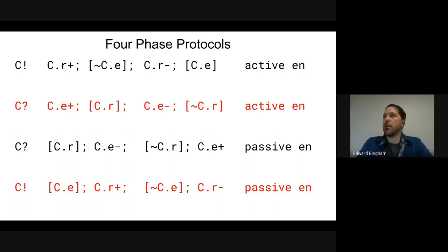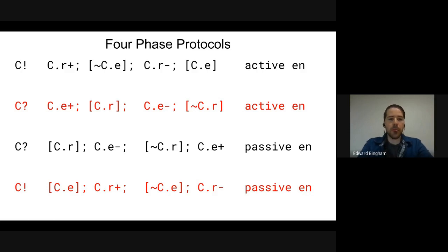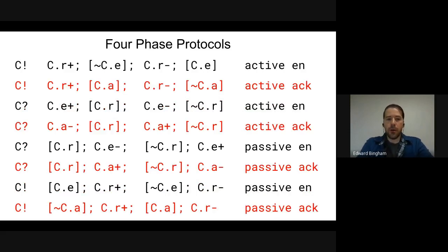If you have this handshake in a loop, then any differences between active and passive sends or active and passive receives are pretty nominal overall — there isn't much of a difference between them. The other alternative we have is whether or not the response from the receiver is an acknowledge or enable.